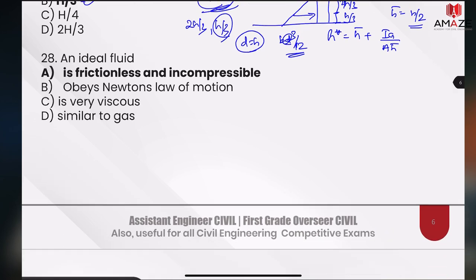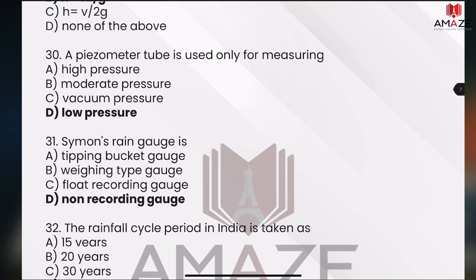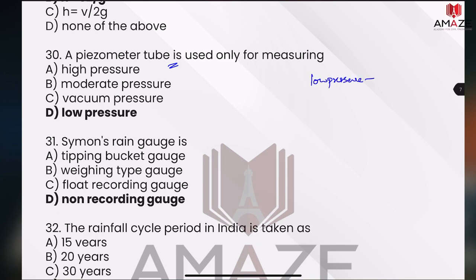The ideal fluid is frictionless and incompressible. Now, the critical depth h of a channel — h is equal to v² by g. Piezometer has a little doubt about it because it measures low to moderate pressure. Piezometer actually measures low pressure to moderate pressures — chain and use.